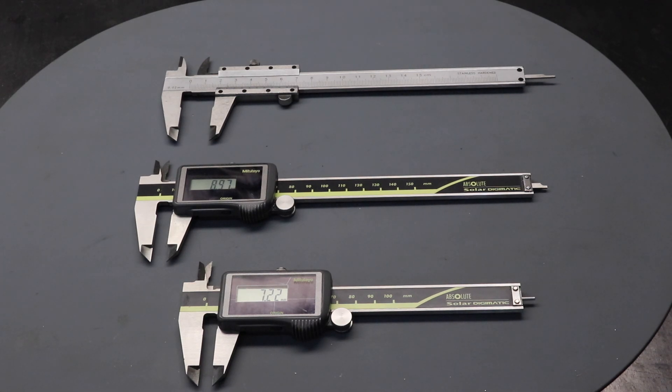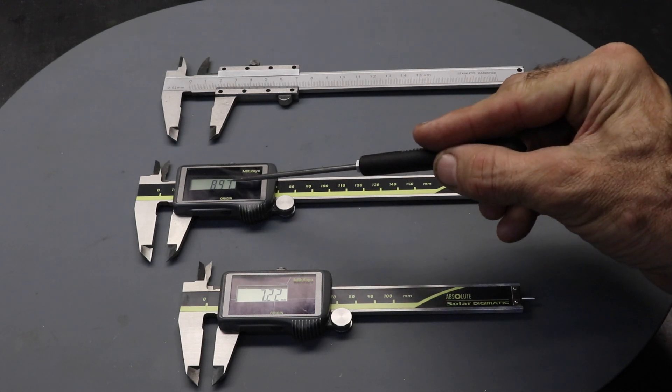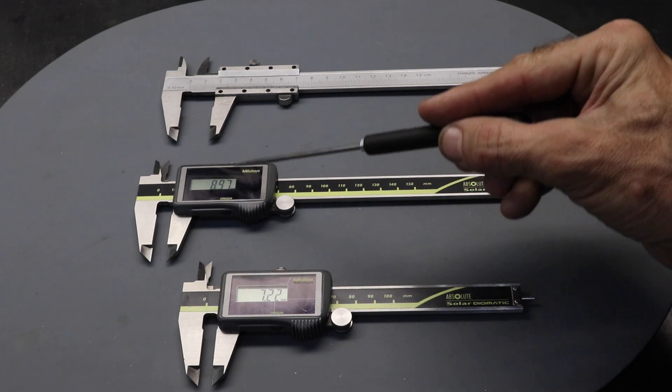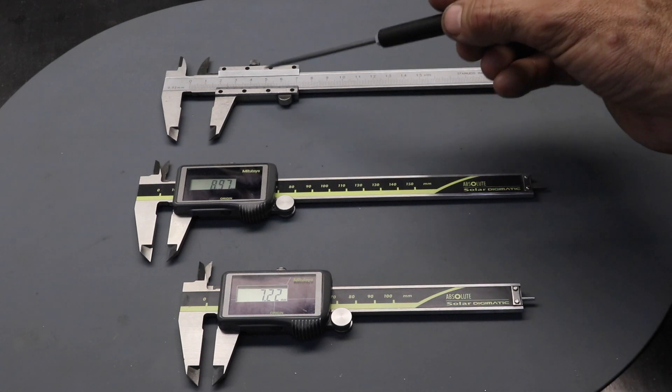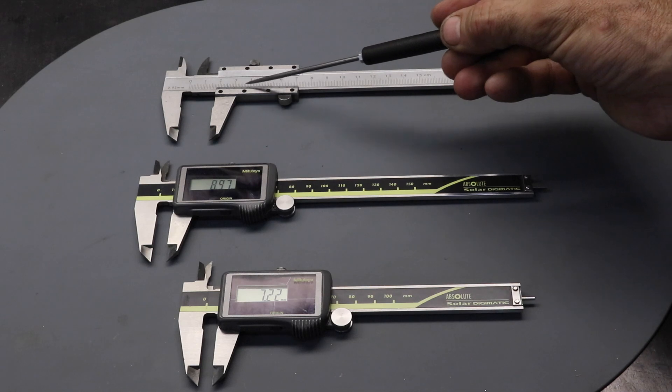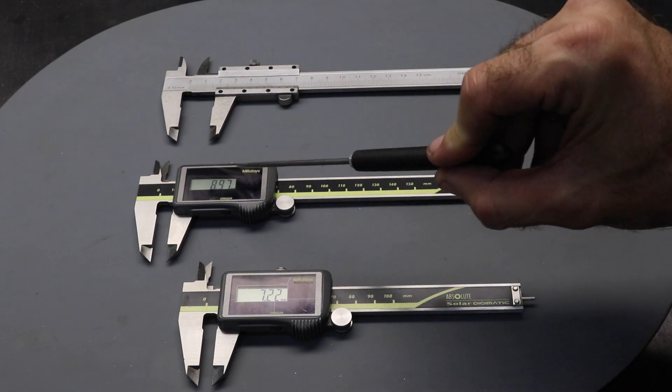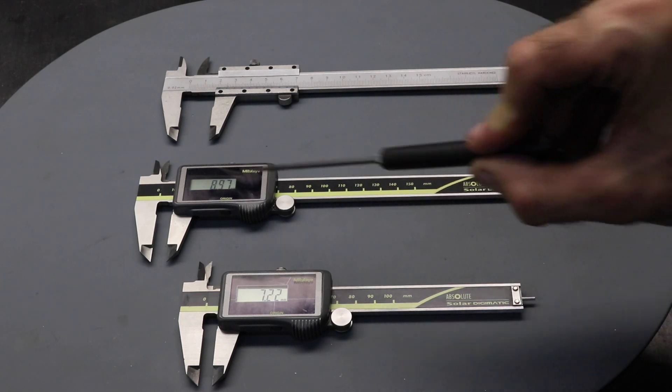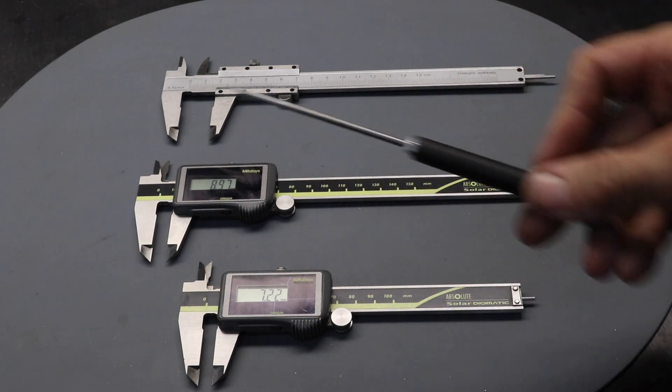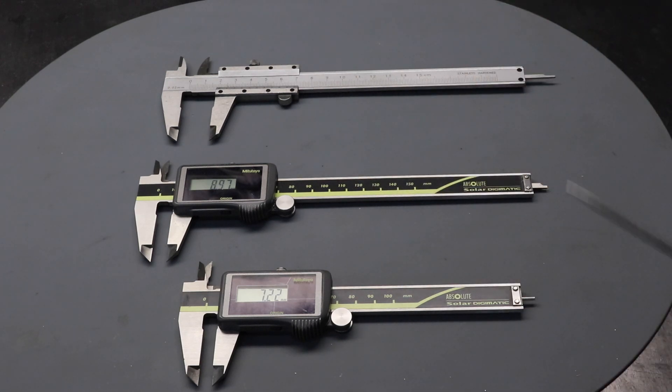As you can probably see from the display on the digital calipers, they read down to a hundredth of a millimeter. So it's one decimal place better than the vernier caliper. Although you can read between markings, it's just a little trickier to do. This is very clear and easy to read. I like using the digital calipers.